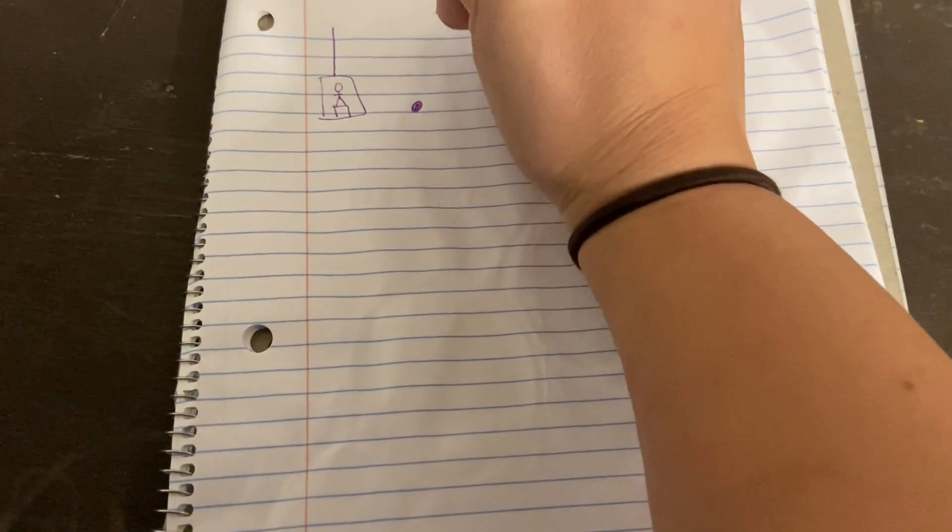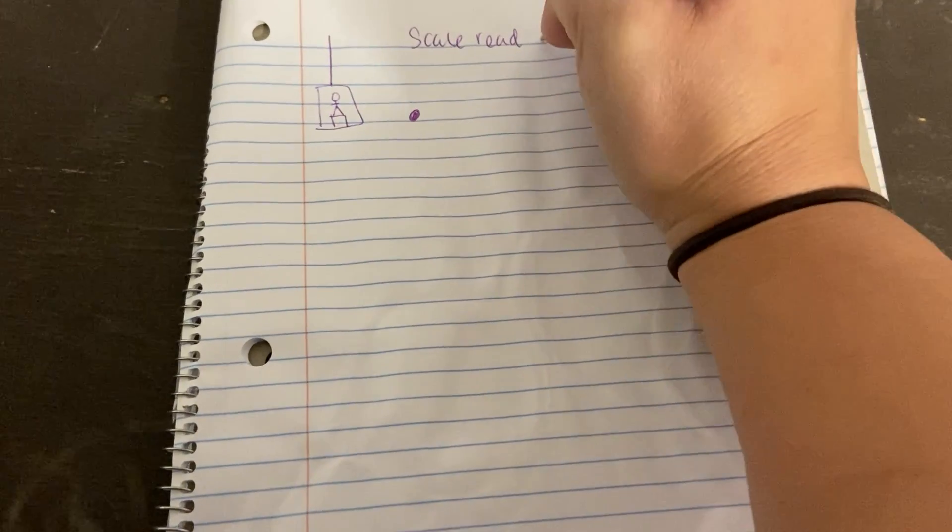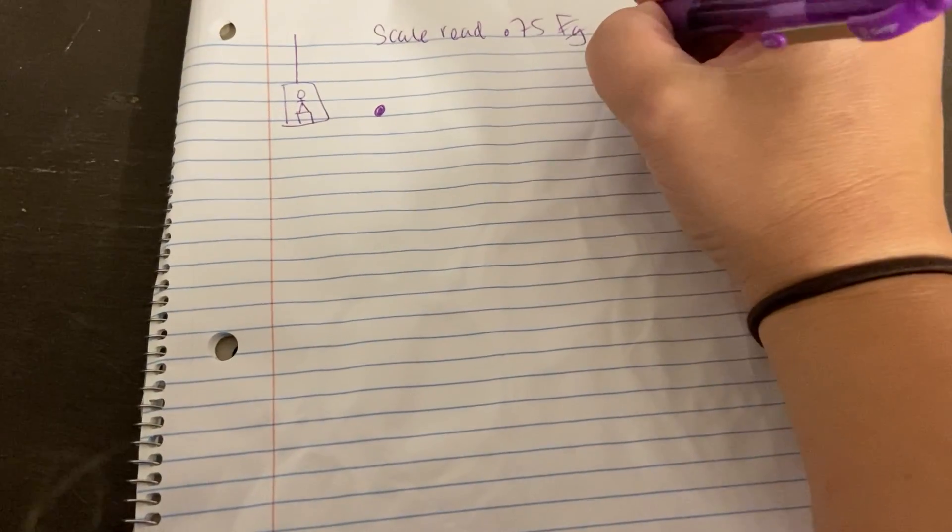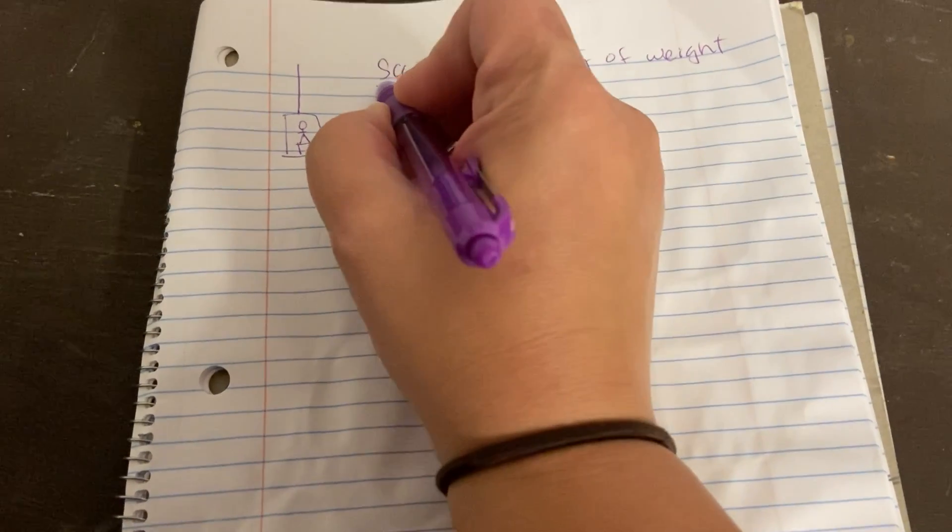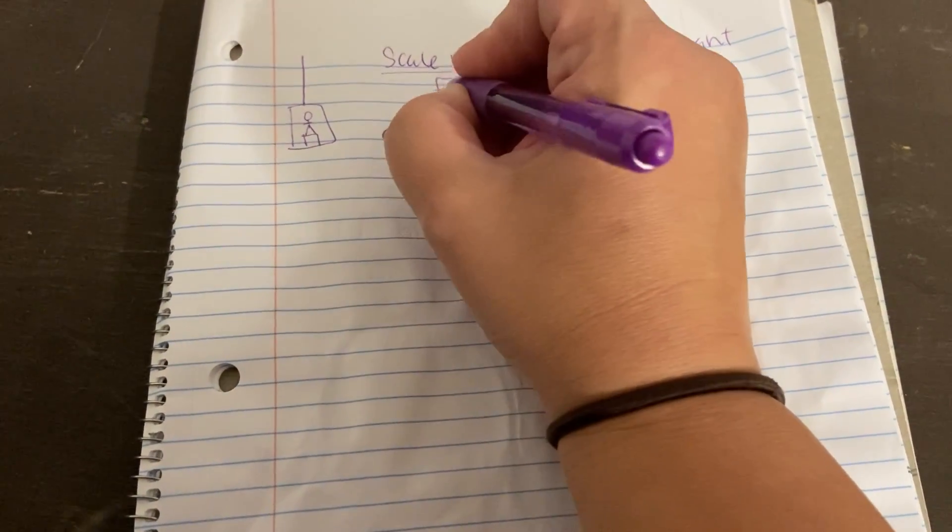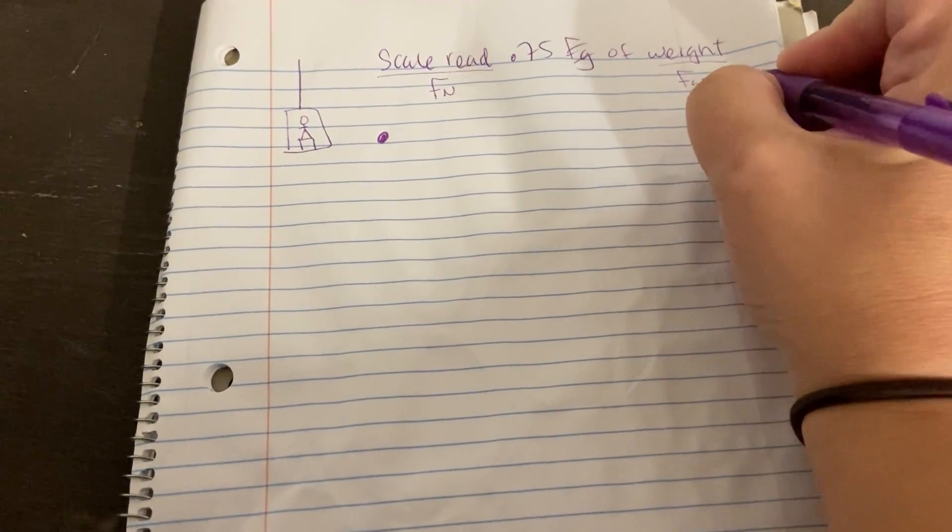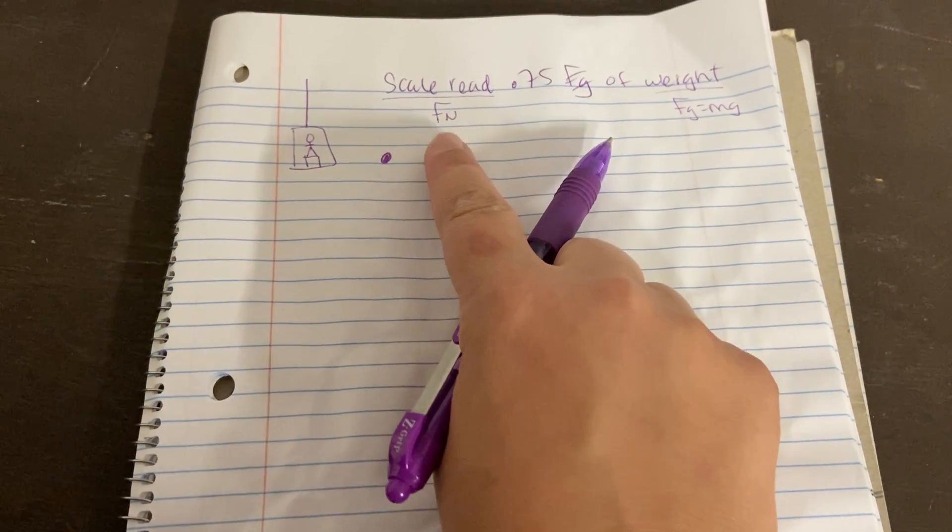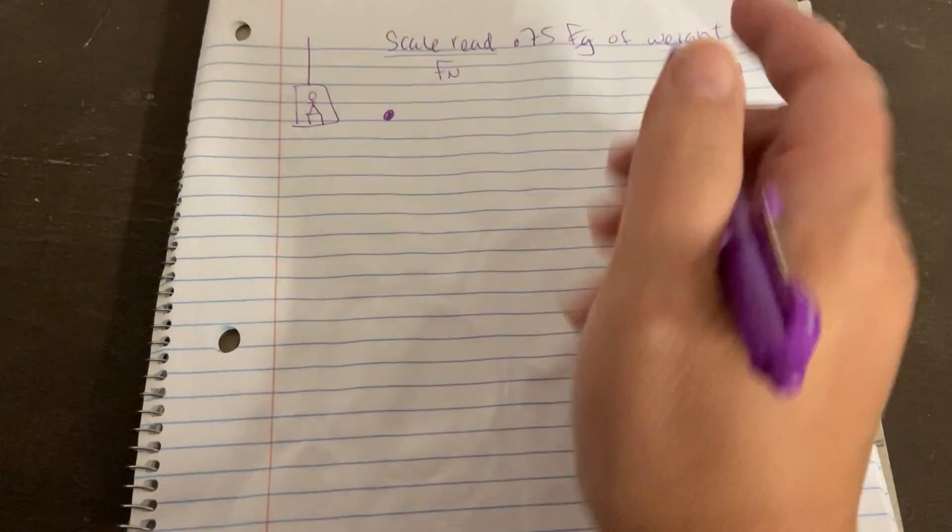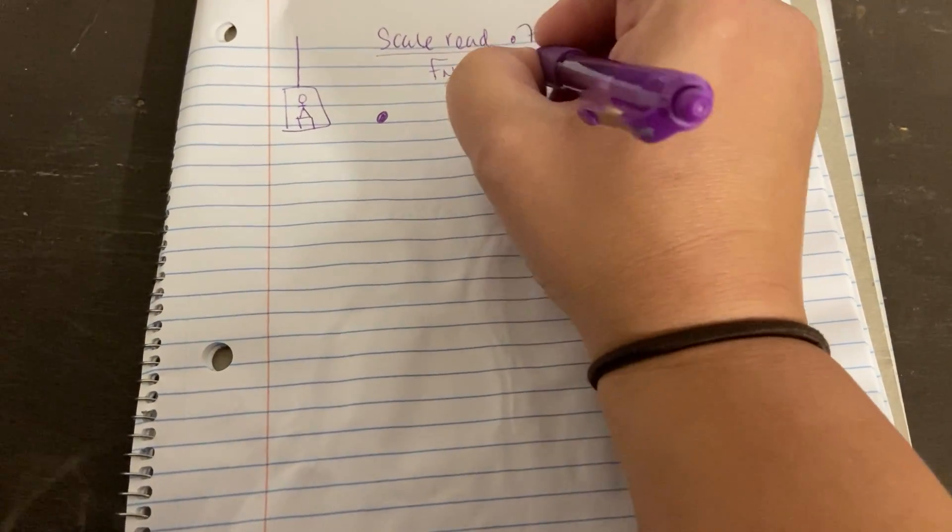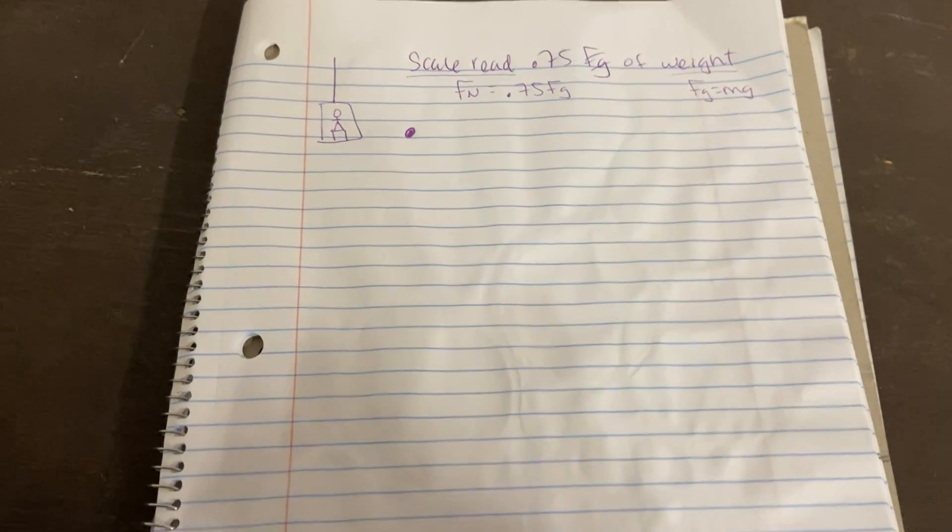Now, the information that it gives us is it says that the scale reads 0.75 of the weight for an instant. For the instant it starts to accelerate. So we have to understand what those terms mean. What a scale reads is your normal force. What your weight is is Fg, which is mg. So when it says that the scale reads 0.75 of your weight for an instant, that means that normal force is going to be equal to 0.75 of your Fg. And that'll come into play here in a second.